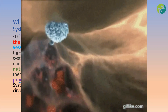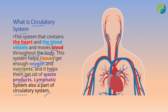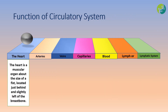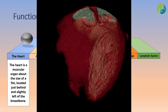The lymphatic system is a part of the circulatory system that we will discuss later. As you can see, this is the heart — the muscular organ present in the thorax or chest cavity, slightly tilted towards the left side of the sternum. Let's summarize the various organs of the circulatory system, which include the heart, arteries, veins, capillaries, blood, and the lymphatic system.